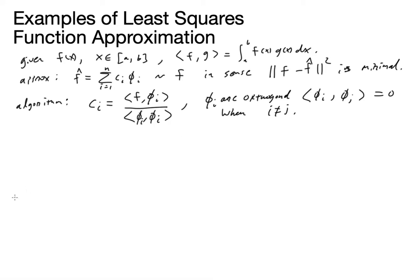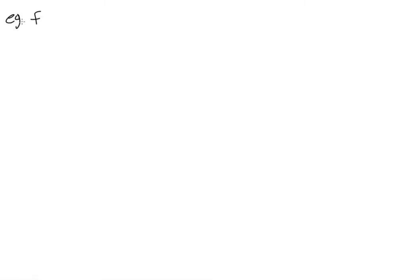That's the procedure we're going to follow. We're going to do two examples. The first example: we're going to have f(x) equal to one minus x — so this is a line — and our orthogonal functions are going to be the Haar wavelets.